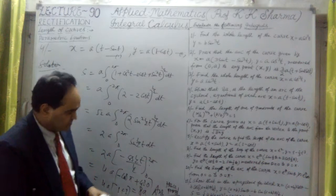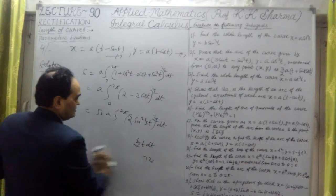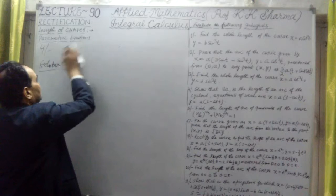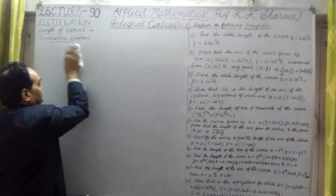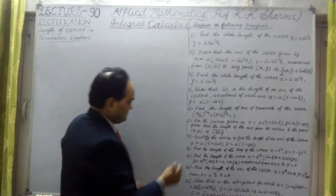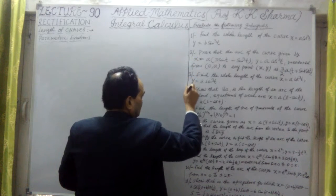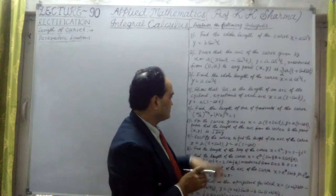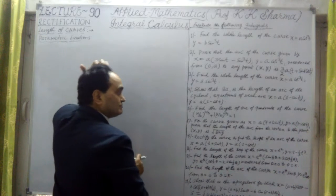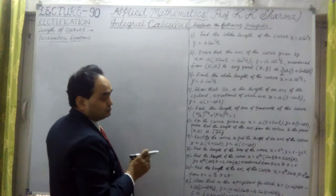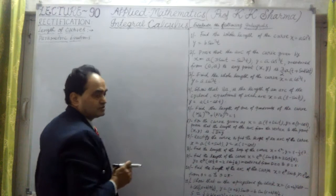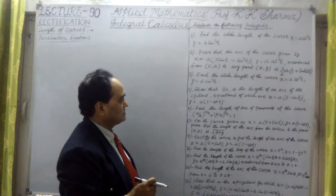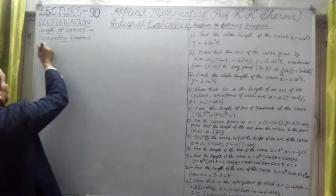This is the final answer: 8a is the length of the arc of this curve, which we have proved. Only one mistake — of minus sign — I had put it as plus sign, but it is minus sign in x = a(t - sin t). Now question number 5: find the length of one quadrant of the curve (x/a)^(2/3) + (y/b)^(2/3) = 1.